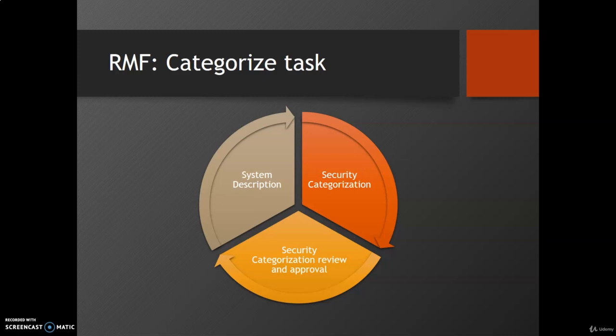The second task is security categorization. We need to categorize the system and document the security categorization results. Security categorization determines and considers potential adverse impact to the organization's operations, assets, individuals, and other organizations resulting from the loss of confidentiality, integrity, and availability of information. The organization has flexibility to conduct the security categorization.